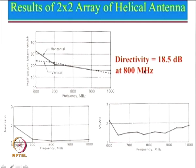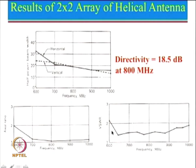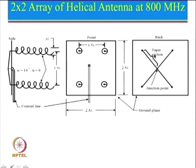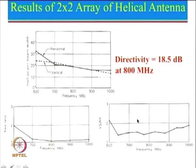Looking at the VSWR performance: the antenna was designed at 800 MHz and one can see that VSWR less than 2 is achieved right from 600 MHz to 1000 MHz, a bandwidth of about 400 MHz. That is approximately 400 divided by 800, or 50 percent bandwidth. I feel the VSWR could be slightly improved by designing the taper section more appropriately to better match 50 ohm, but still VSWR is less than 2. In fact, for most of the region VSWR is actually less than 1.5, so it is fairly well matched.